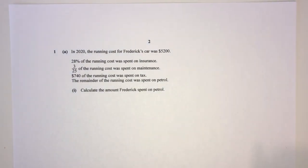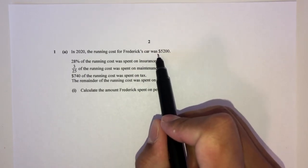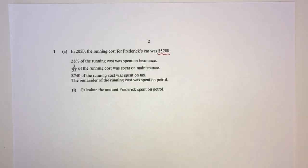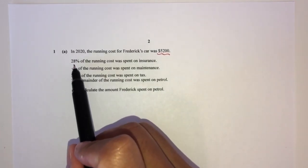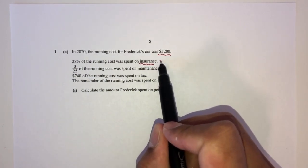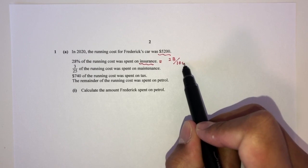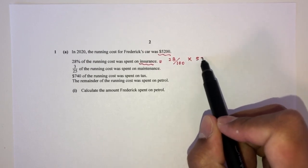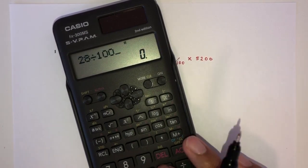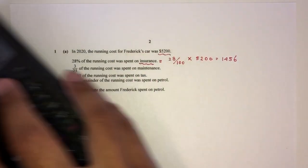So part one: in 2020, the running cost of Frederick's car was 5200. It cost him this much every year to run and maintain his car. 28% of the cost was spent on insurance, so let's find out how much was spent on insurance. 28% is 28 over 100 times 5200 — that's 28 divided by 100 times 5200, which gives 1456 spent on insurance for that year.